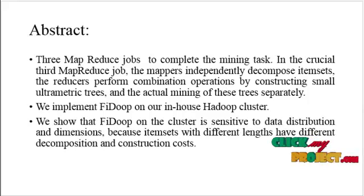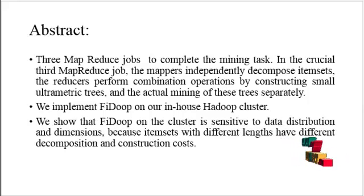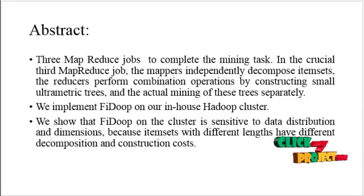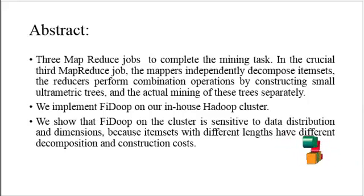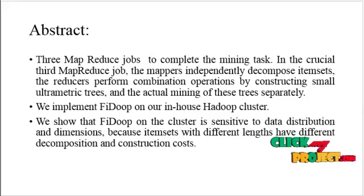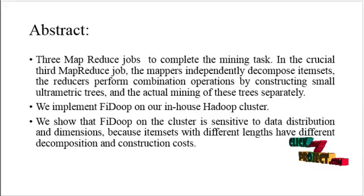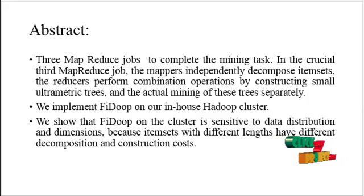Frequent item set mining algorithms can be divided into two categories: A priori and FP growth schemes. A priori is a classic algorithm using a generation-and-test process that generates large numbers of candidate item sets. A priori has to repeatedly scan an entire database. Most previously developed parallel frequent item mining algorithms are built upon the A priori algorithm.